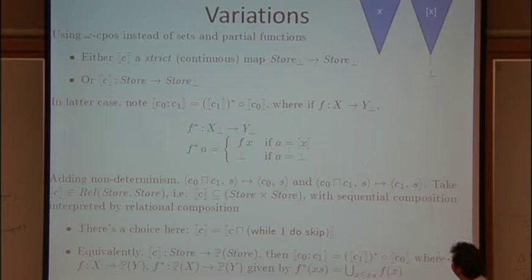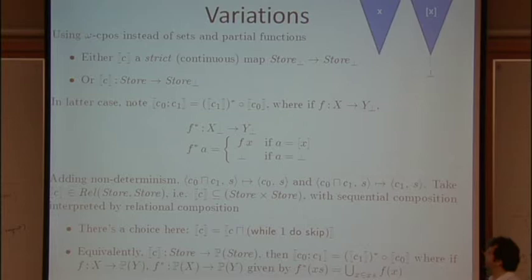So then sequential composition gets interpreted by relational composition and everything goes smoothly. Now this is very common but again we've made a really non-trivial choice here because this semantics has made a choice about observations that you might not have even noticed. You might have just written this down without thinking about it.